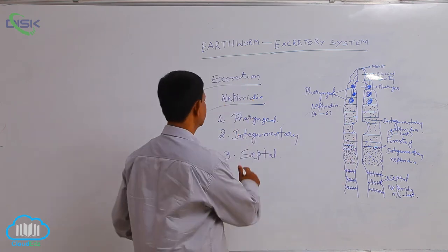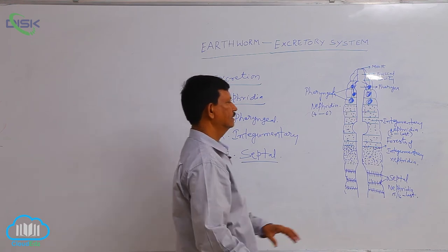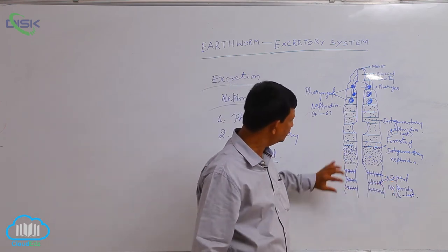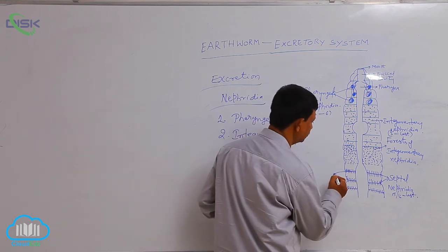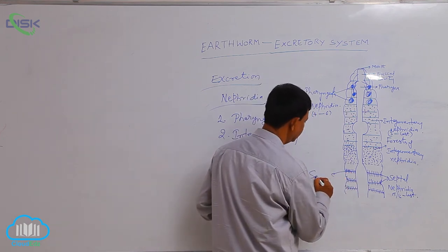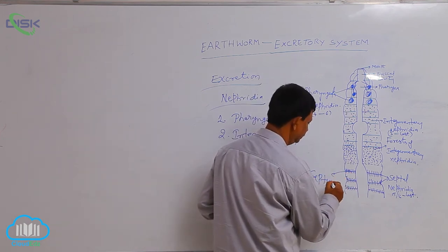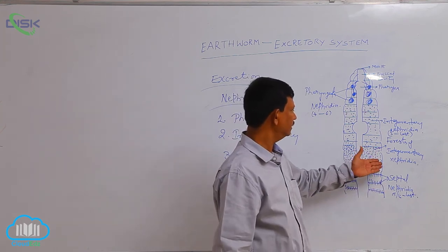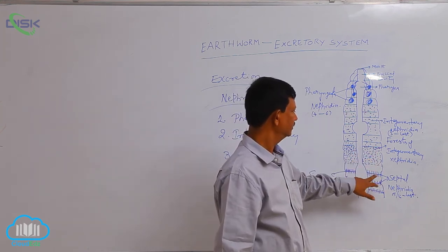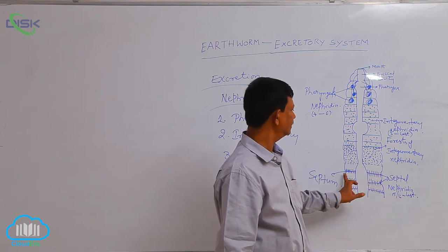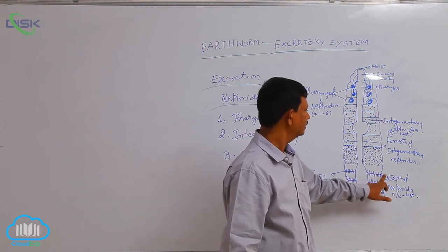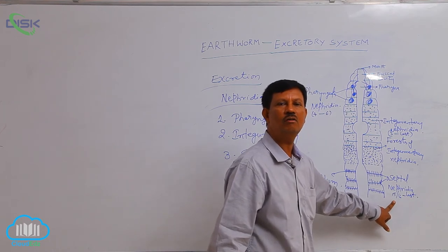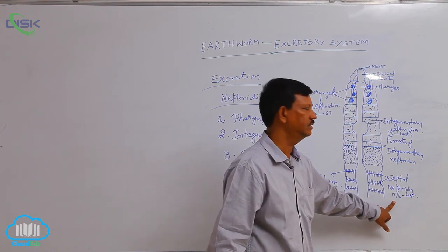Third, septal nephridia. These nephridia are attached to the septa. In between two segments, there is a septum. These nephridia are attached to both sides of the septum, on either side of the alimentary canal. They start from the 15/16 septum to the last segment of the body.